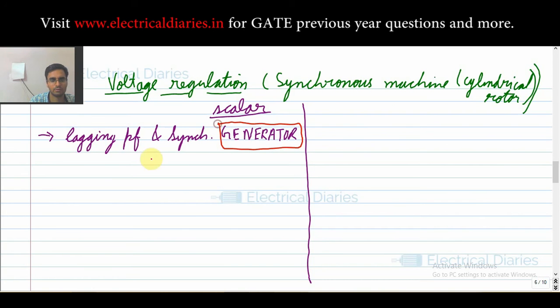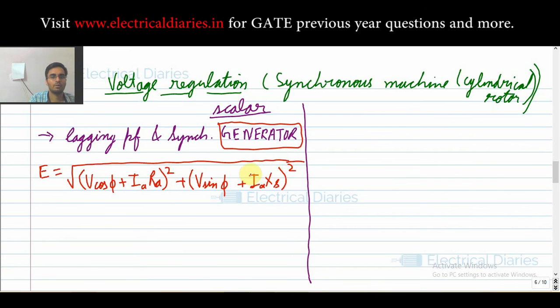This equation is for the lagging power factor and synchronous generator, that is alternator. The equation is: E, the excitation voltage, equals the square root of (V cos φ + Ia ra)² plus (V sin φ + Ia xs)². This is the formula for the lagging power factor hand synchronous generator.